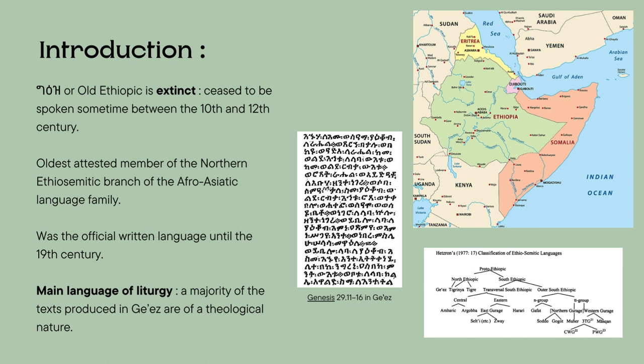The knowledge we have of the language derives from the vast literature written in Ge'ez. Inscriptions of Ge'ez have been dated to as early as the 5th century BC and were found in northern Ethiopia and Eritrea. It's the oldest attested member of the Ethiosemitic branch. At first researchers believed that it was the proto-language of all Ethiosemitic languages, but today that assumption is widely refuted. Nowadays, it's only used as the main language of liturgy, or lingua sacra, in the Ethiopian and Eritrean Orthodox Tewahedo churches, as well as in the Catholic churches and the Beta Israel Jewish community.